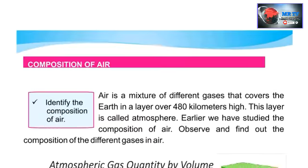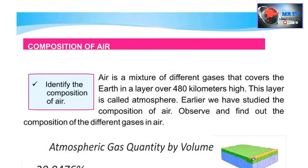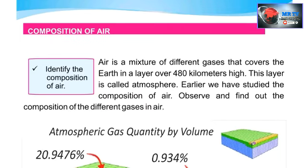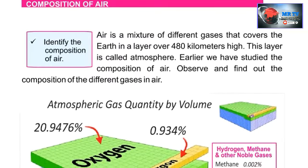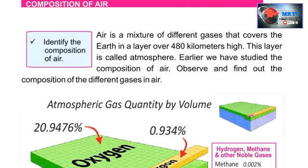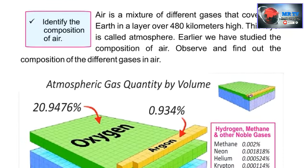Now, the composition of air. Air is a mixture of different gases that covers the Earth in a layer over 480 kilometers high. This layer is called the atmosphere. We will now observe and find out the composition of the different gases in the air.